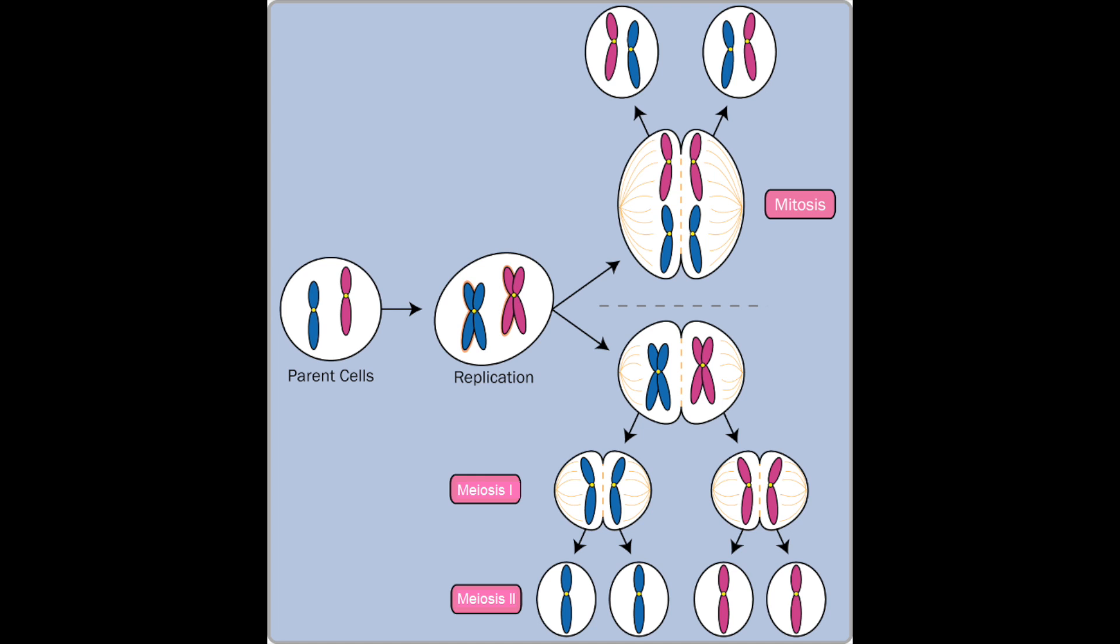However now these cells will divide again and this gives us four sex cells each with a single set of chromosomes instead of two which we would expect in mitosis.